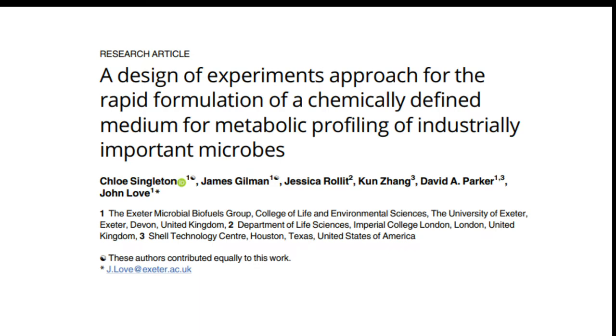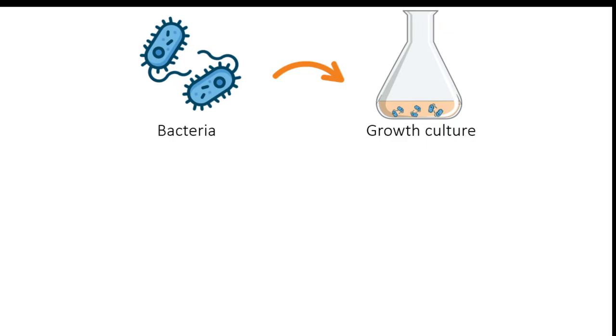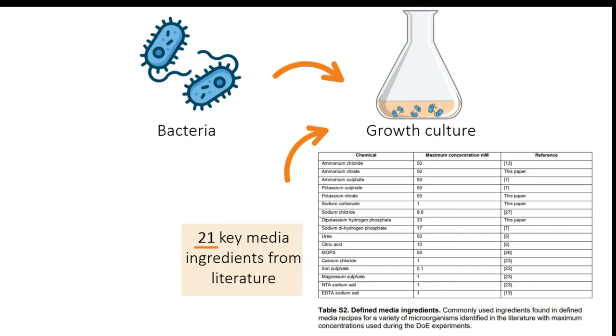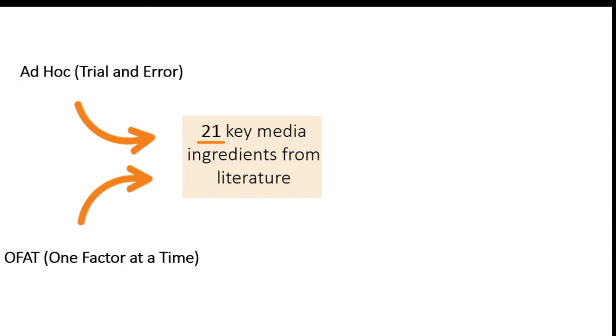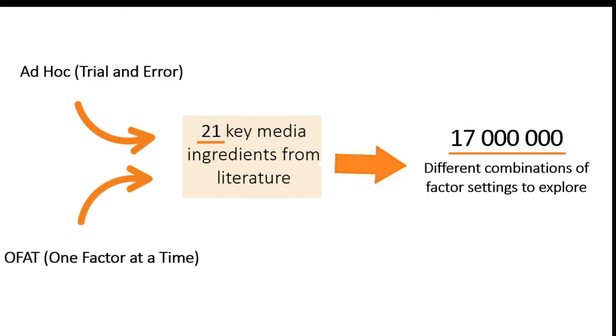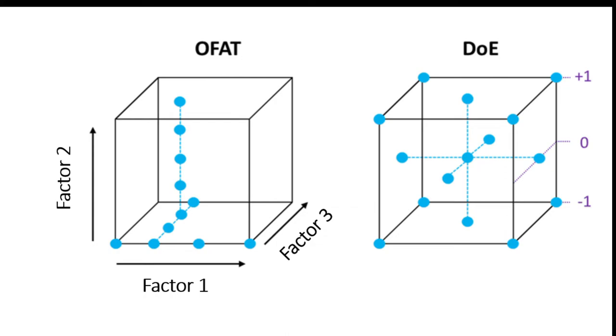This scenario is loosely based on work by Singleton et al. in 2019. In the same situation, the authors were trying to develop an optimal media for an industrially relevant bacterium. The authors first parsed through literature to find information on key media components and came up with a list of 21 different ingredients that were said to have an effect on bacterial growth. If we employ Anna's strategy of ad hoc or OFAT experimentation on all 21 different ingredients, there are over 17 million different combinations of trials that can be explored. This number is completely unfeasible and impossible to investigate. Instead, the authors used design of experiments or DOE to screen through the 21 different ingredients.